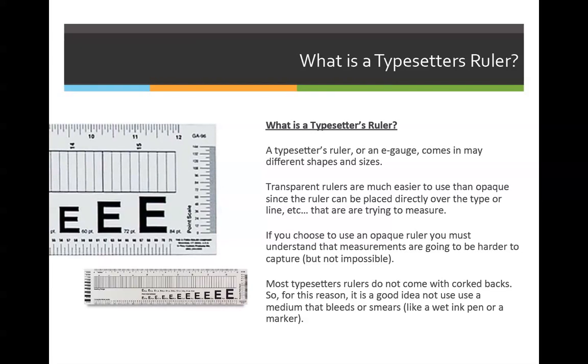Corked back rulers are really good to use if you have to draw lines. Usually what we'll use a typesetter's ruler for is measuring things. If you wanted to actually draw a line or something, you'd use a different type of ruler. But what I want to point out about corked back rulers is they're really good if you're trying to draw with something that is like a wet medium.